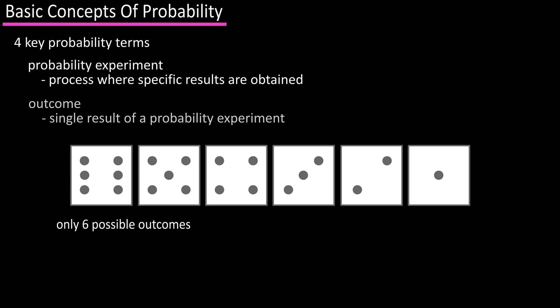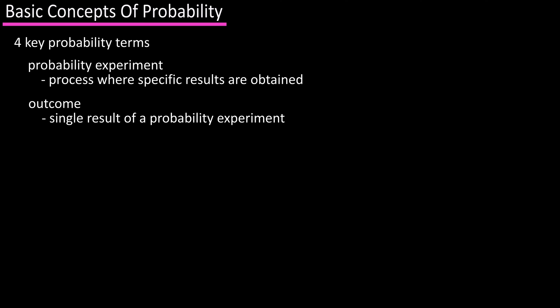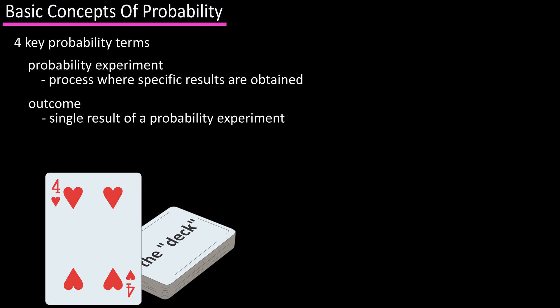An outcome is another key term, which is a single result of a probability experiment. So if you draw a four of hearts from a full deck of cards, that is an outcome. Sample space is another key term.